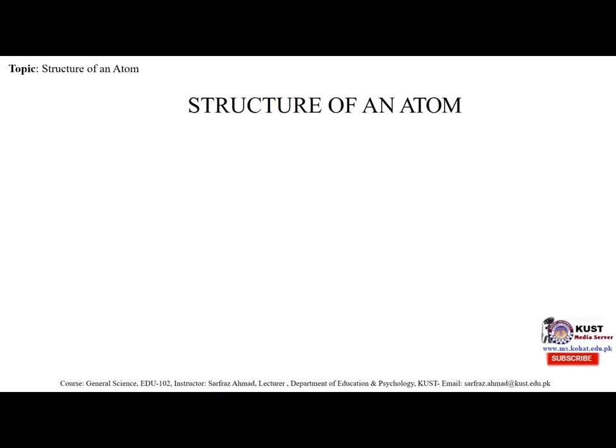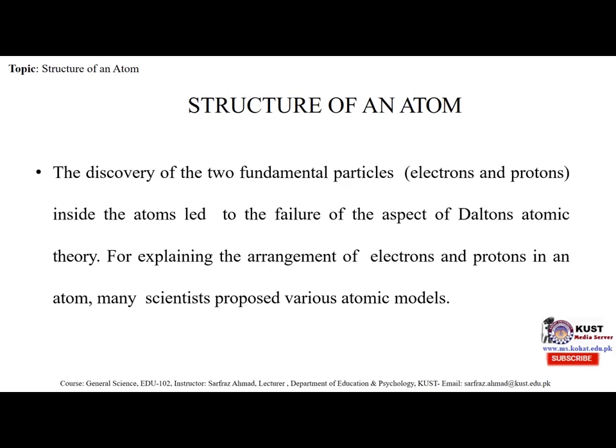Democritus' explanation of the atom begins with a stone. A stone cut in half gives two halves of the same stone. If the stone were to be continuously cut, at some point there would exist a piece of the stone small enough that it could no longer be cut. The term atom comes from the Greek word for indivisible, which Democritus concluded must be the point at which any form of matter cannot be divided anymore. The discovery of electrons and protons inside the atom led to the failure of certain aspects of Dalton's atomic theory.